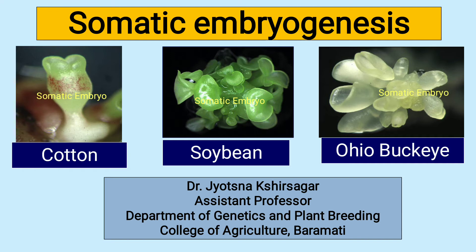The embryo is a bipolar structure, and during embryogenesis, shoot and root meristems are initiated.